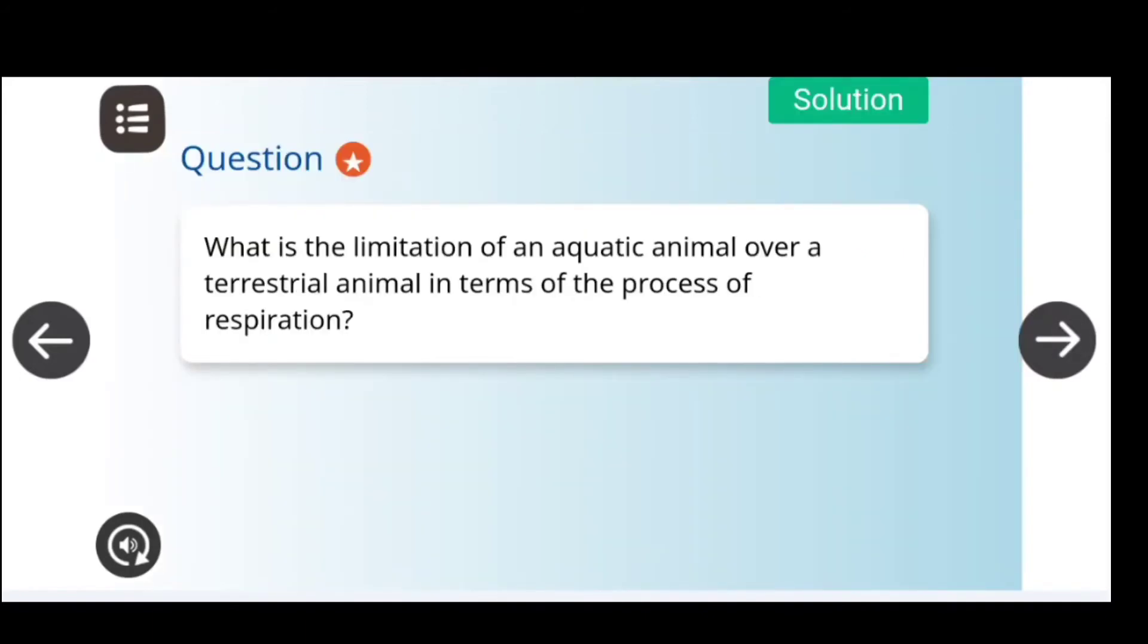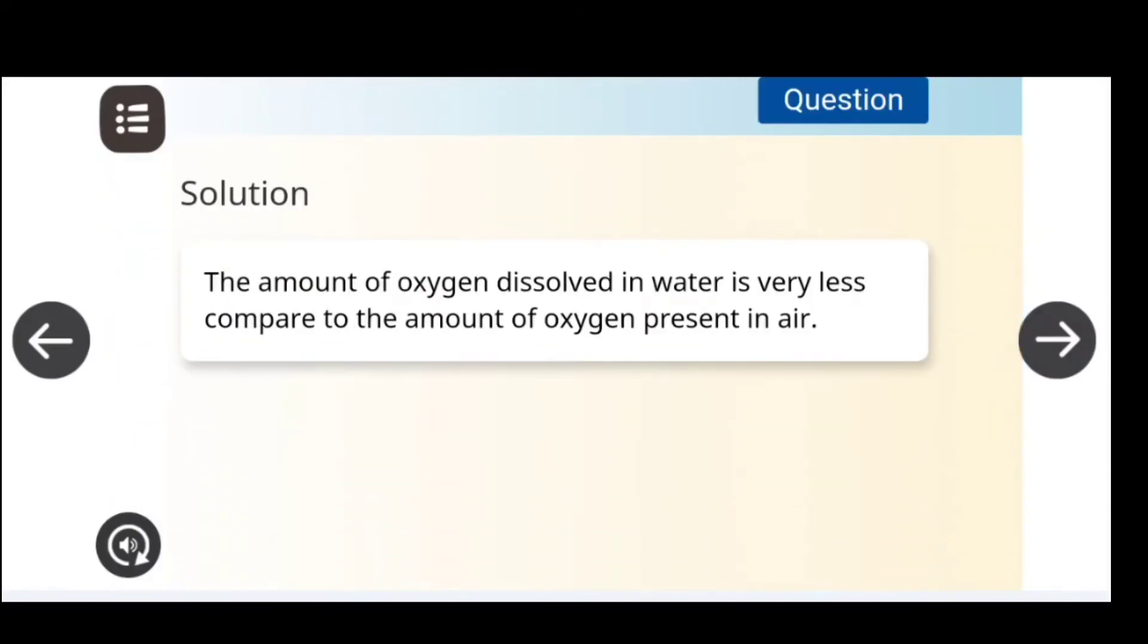What is the limitation of the aquatic animal over a terrestrial animal in terms of the process of respiration? The answer is: The amount of oxygen dissolved in water is very less compared to the amount of oxygen present in air.